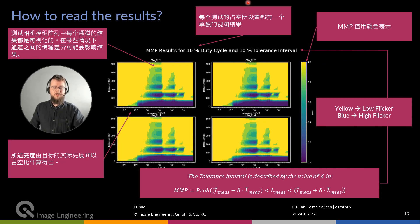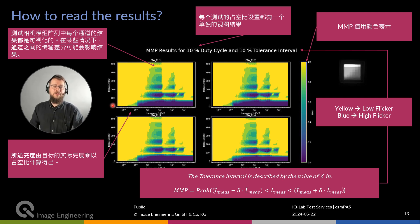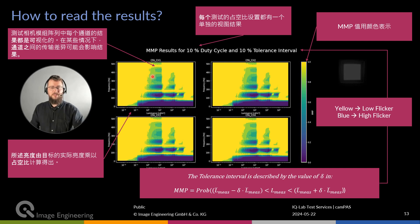Analogous to CTA visualizations, we can put all MMP numbers into a heatmap. Yellow color indicates low flicker and blue indicates high flicker. The X-axis shows luminance — we can see that flicker changes over luminance. The Y-axis shows that we have tested multiple frequencies. We can see this is an HDR sensor with at least three exposures, and we see that the flicker performance varies with frequency and also with luminance.